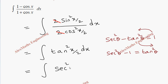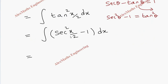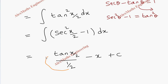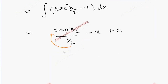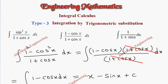So the integral becomes the integral of (secant squared(x/2) minus 1) dx. The integration of secant squared(x/2) is tan(x/2), and since the coefficient of x is 1/2 we divide by that, giving 2 tan(x/2). The integration of 1 is x, so the result is 2 tan(x/2) minus x plus C.